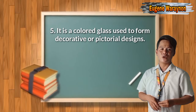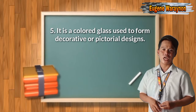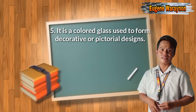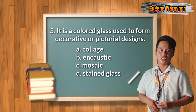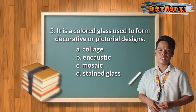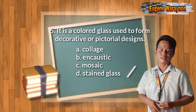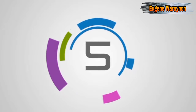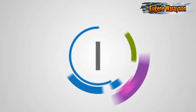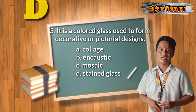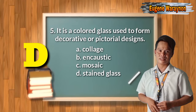Number five: it is a colored glass used to form geometric or pictorial designs. A. Collage, B. Encaustic, C. Mosaic, D. Stained Glass. The answer is letter D, Stained Glass.